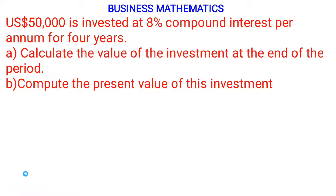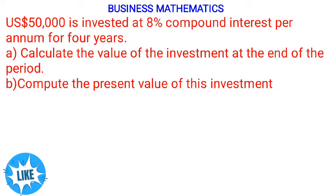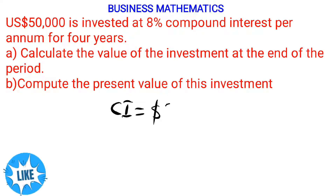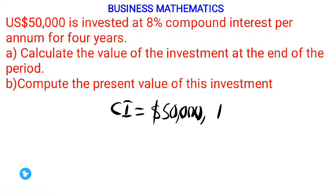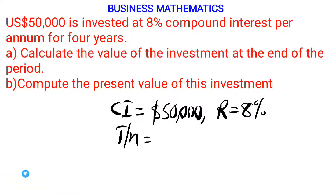So we know N to be 4, we know the cost of investment to be $50,000 USD, and we know the percentage rate to be 8%. Let me set our parameters: the cost of the investment, CI, is $50,000 USD; the rate is 8%; and the time, N, is 4 years.